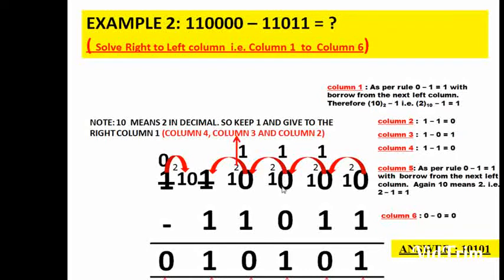The third column asks the fourth column for a borrow of one, but the fourth column is also zero, so it cannot provide it. So the fourth column asks the fifth column. The fifth column has one, so it can give a borrow of one to the fourth column — it gives it and turns itself to zero. So here comes one borrow.